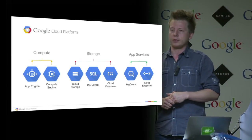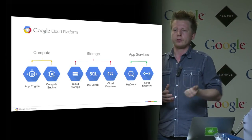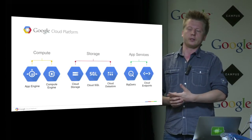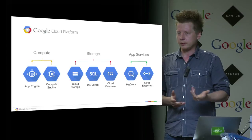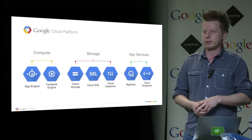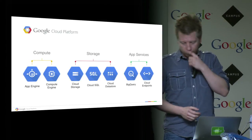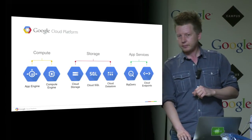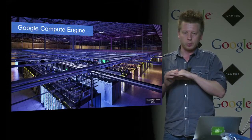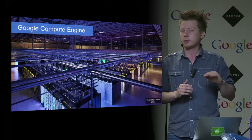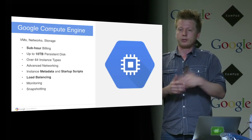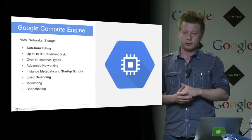We also have app services. For instance, BigQuery lets you run SQL queries on terabytes of data and get results literally in seconds, enabling all sorts of analytics on your data. I'll tell you about Cloud Endpoints a bit later. Starting from this low-level infrastructure as a service layer, we call it Compute Engine. Compute Engine is all about virtual machines, networks, and storage.